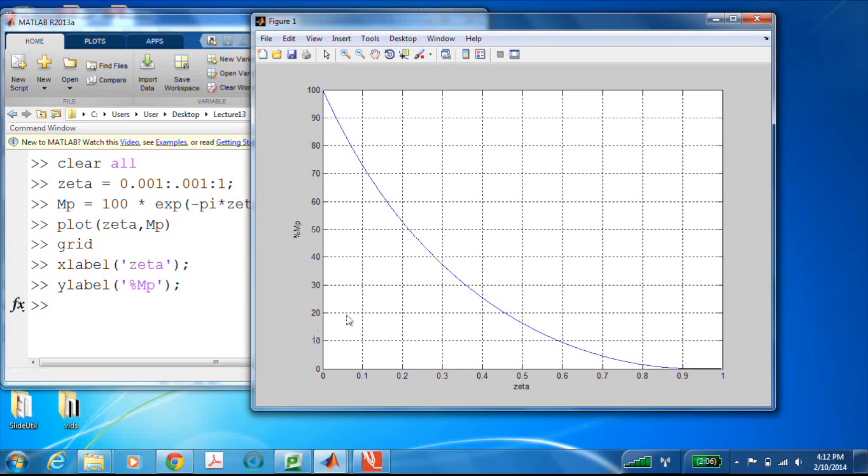So if we wanted a percent overshoot of 20%, we can go over here, and now we know that the zeta should be 0.45. This table is pretty popular. You'll find it in a lot of texts and other places for doing control system design.